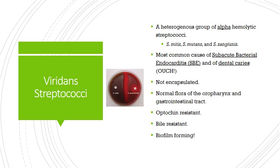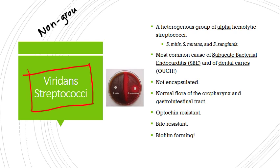Let's start with the viridans streptococci. These are a non-groupable, heterogeneous group of alpha-hemolytic streptococci — they kind of made their own band. There are a wide variety of them, but we'll focus on three: S. mitis, S. mutans, and S. sanguinis. Whatever applies to one can pretty much apply to the others.